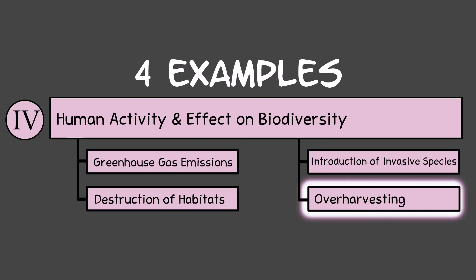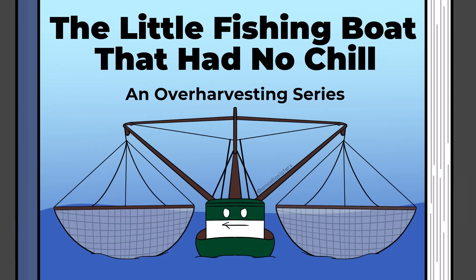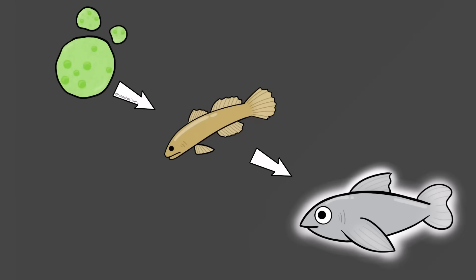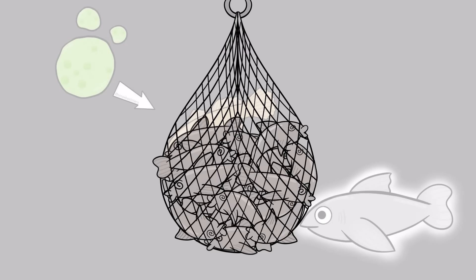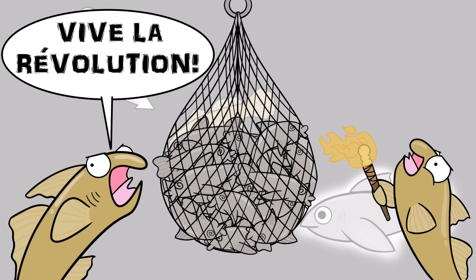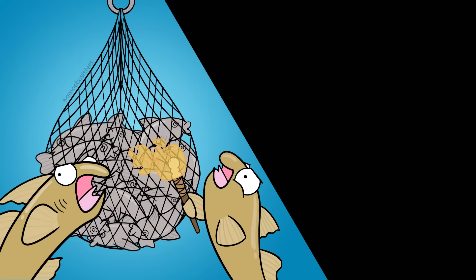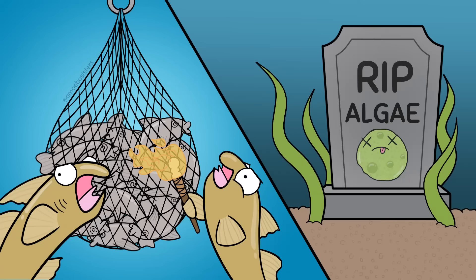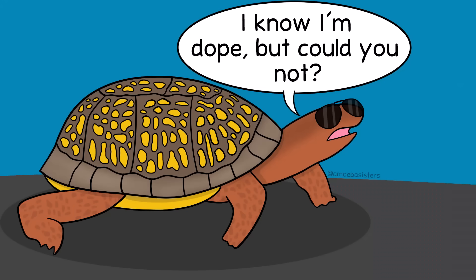Example four: overharvesting. Overfishing is a well-known example. Consider a fish that may be a secondary consumer — if it is overfished in a way that is not sustainable for the population, the smaller fish it feeds on could have an increasing population as their main predator is gone. With a greatly increased primary consumer population, the producer population could significantly decrease, affecting its ability to support trophic levels above it. Overharvesting doesn't just involve overfishing — some pet trades involving amphibians, birds, or reptiles can also lead to overharvesting if not run sustainably.